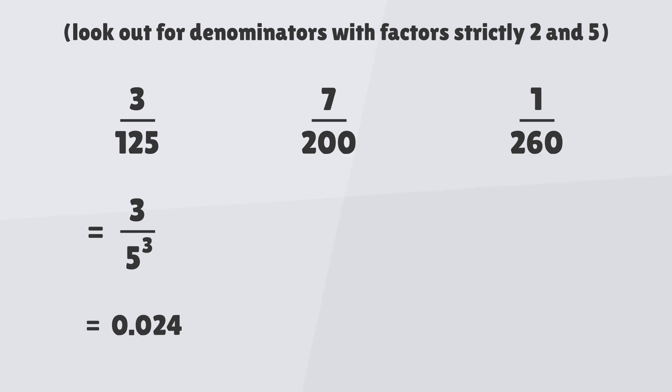The denominator of the second breaks down to 2 cubed multiplied by 5 squared. Again, since the denominator of the fraction only consists of factors of 2 and 5, it will also terminate.